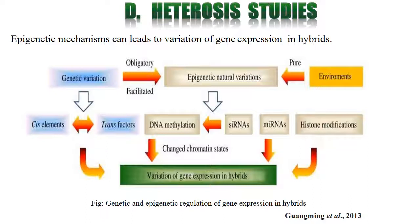Heterosis studies: Epigenetic mechanisms can lead to variation in gene expression in hybrids. When compatibility of two parents is increased, hybrids are said to be more beneficial. Epigenetic natural variation leads to changes through cis elements, trans factors, methylation, siRNA, miRNA, or histone modification — the compilation of different desirable characters changes chromatin status and gene expression in hybrids, making them potentially superior in terms of biotic or abiotic stress conditions compared to the parents.